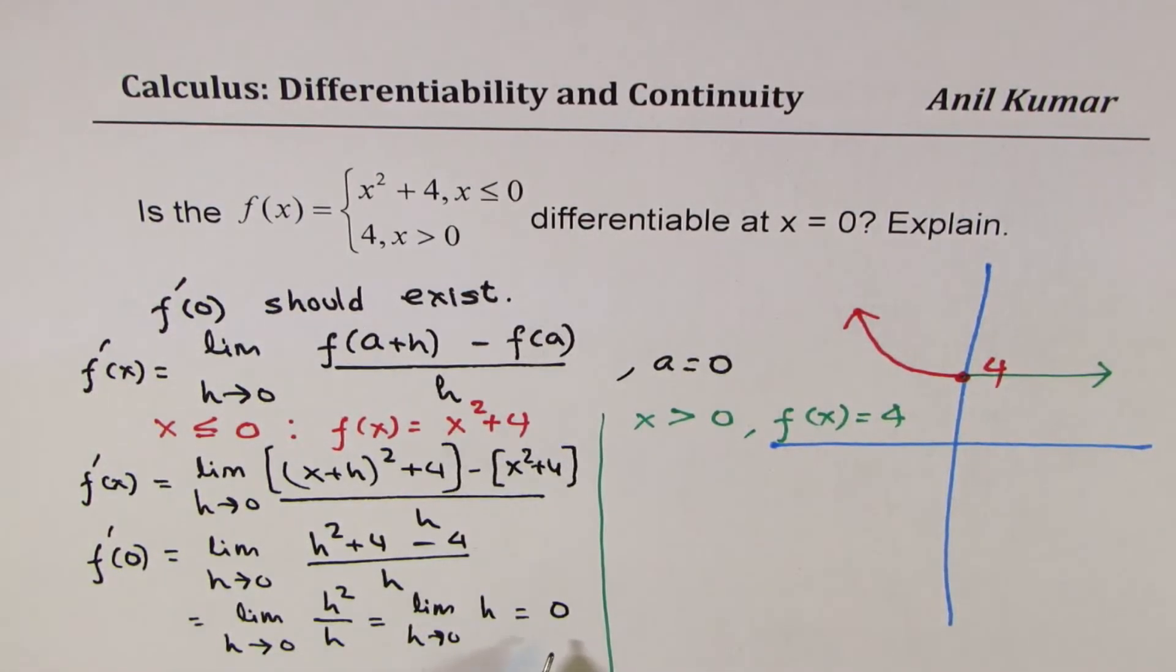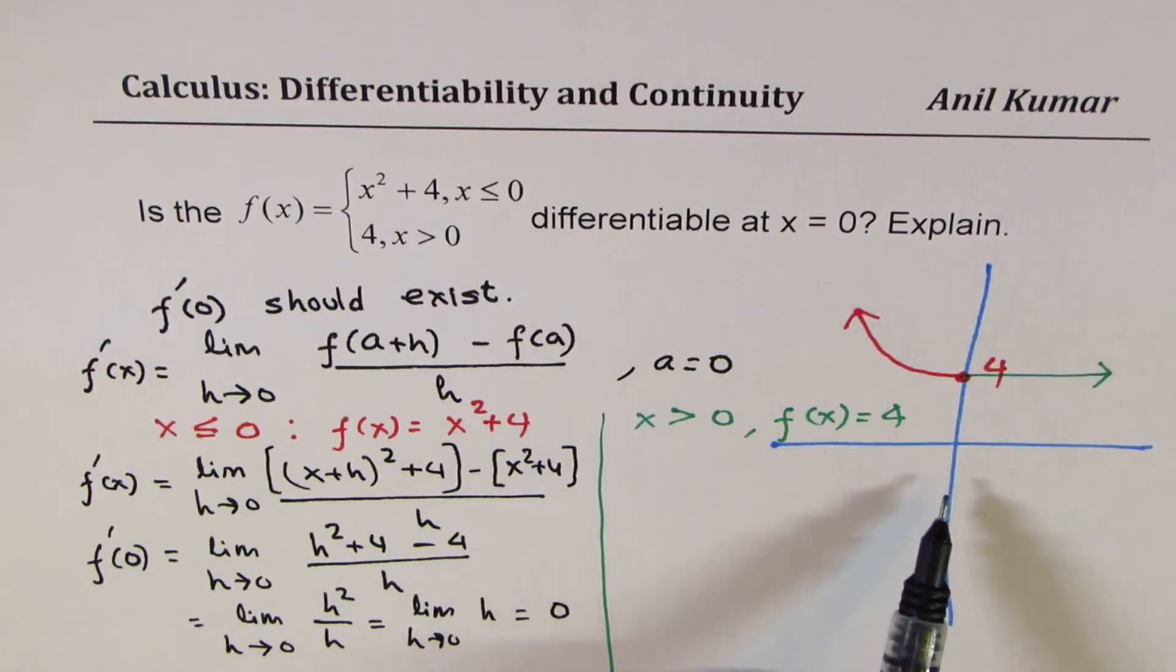which is limit h approaches 0 of h, which is 0. Perfect. So that is how from the left side, you find that the derivative is 0. Now, let's do the same on the right side. So in that case...